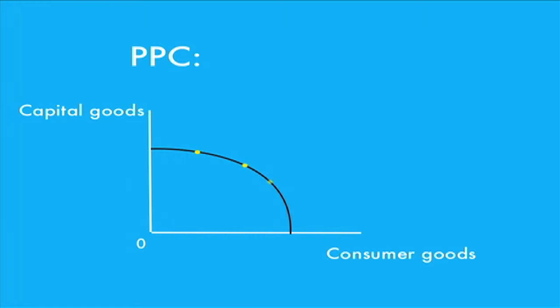Each point on the curve shows a different combination of capital and consumer goods. At point A, the economy is producing a lot of capital goods, but only a small amount of consumer goods. At point B, the economy is producing fewer capital goods and more consumer goods.